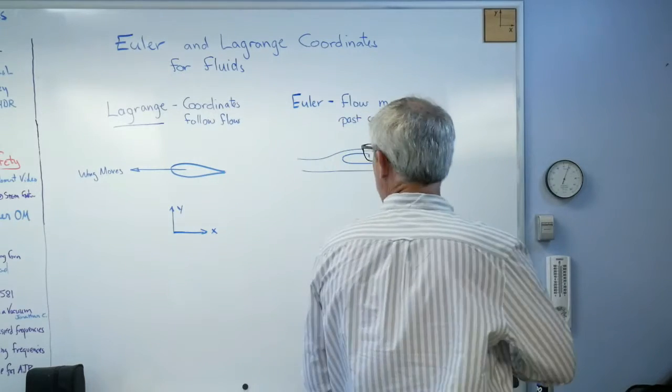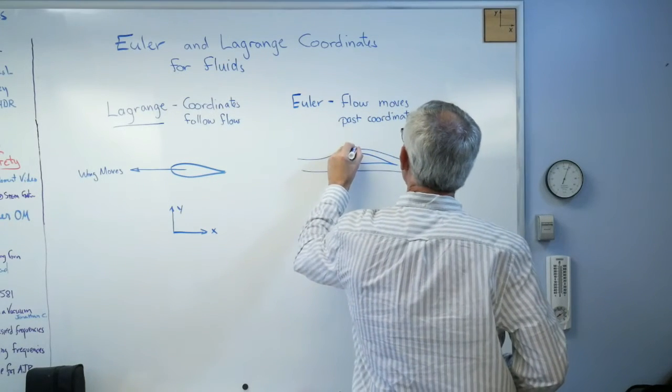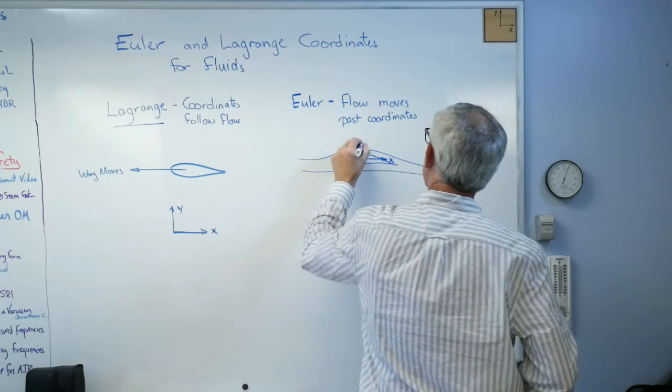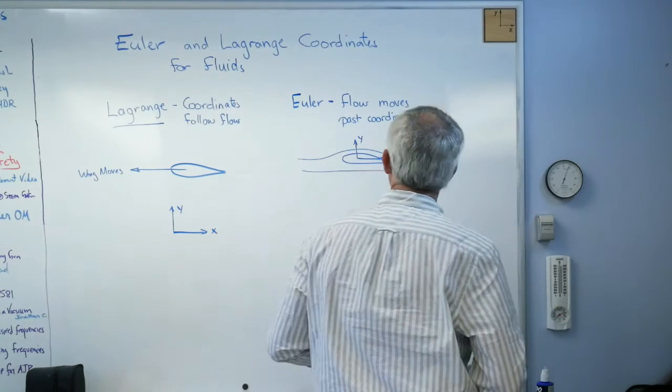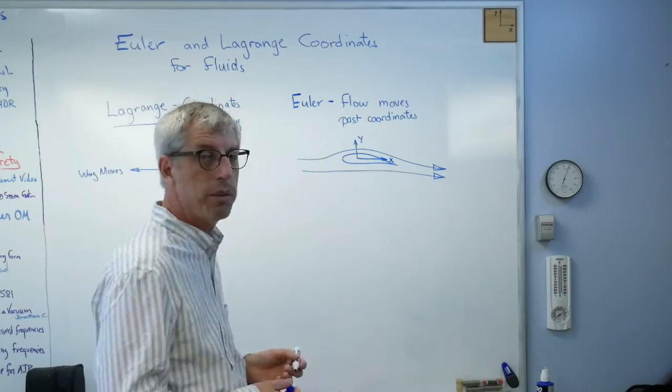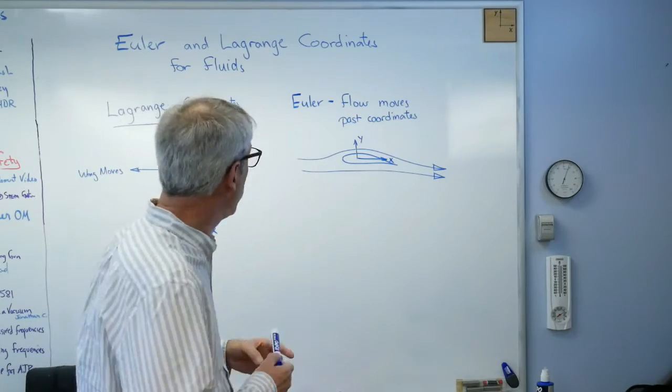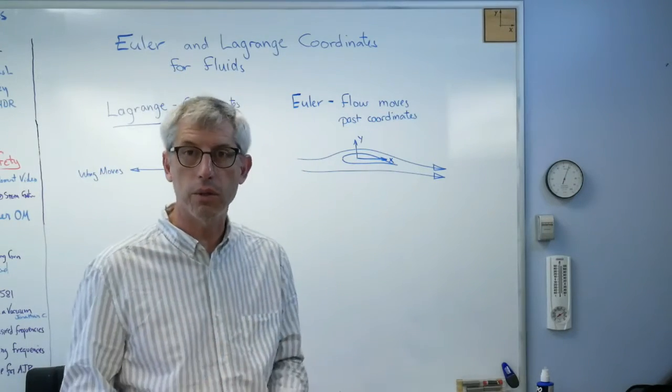In this case, the coordinate system is fixed. I'll draw it right there. I'll get my head out of your way here. A coordinate system that's stuck to the model and the fluid goes past it. That's Eulerian.